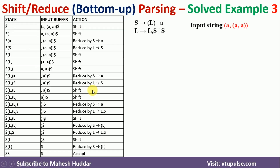We will apply bottom-up or shift-reduce parsing to check whether the input is valid or not. We have three things: one is stack, second is input buffer, and third is action. Initially the stack contains nothing, and the entire input string is in the input buffer. We will start with a shift action.